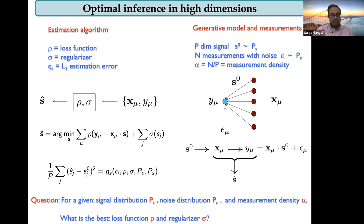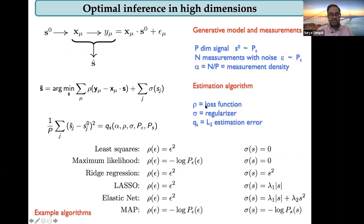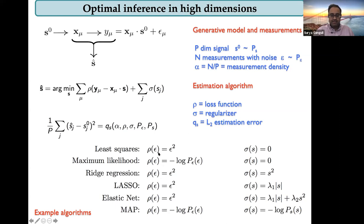This is a simple statistics problem, but the answer is quite rich and interesting. Almost all algorithms we know and love are special cases of this formalism: least squares regression uses squared loss with no regularizer, ridge regression uses squared loss and squared regularizer, maximum likelihood uses minus log probability of the noise distribution, MAP estimation uses minus log probability of noise and signal, and the famous LASSO is another special case. The question is: what is the best algorithm you can possibly choose given these generative model assumptions?